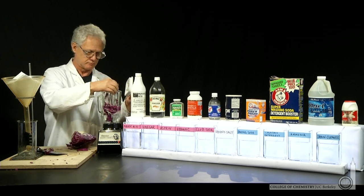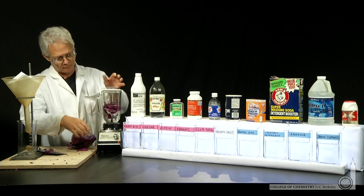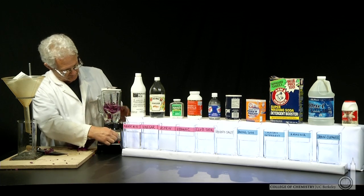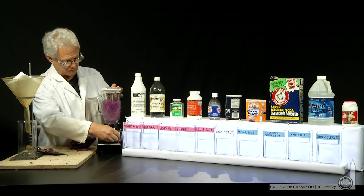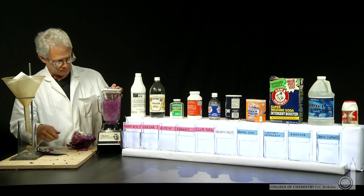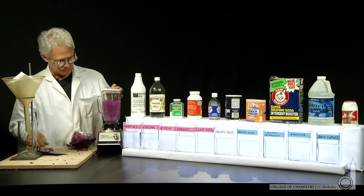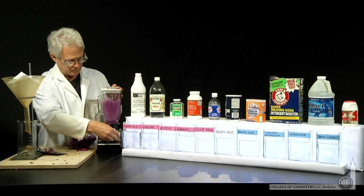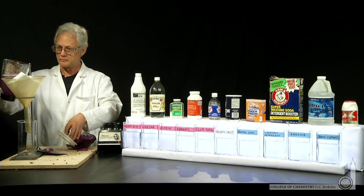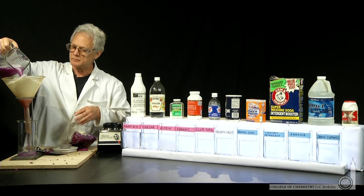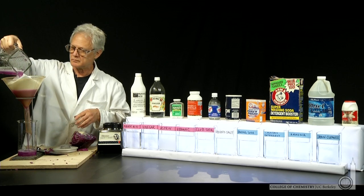So Lonnie can make what's called a pH indicator from cabbage. He's going to grind up some cabbage leaves in water and make a slurry, and then extract the cabbage pH indicator from that slurry. You can do that rather easily by filtering this solution to give you a beautiful purple acid-base indicator.